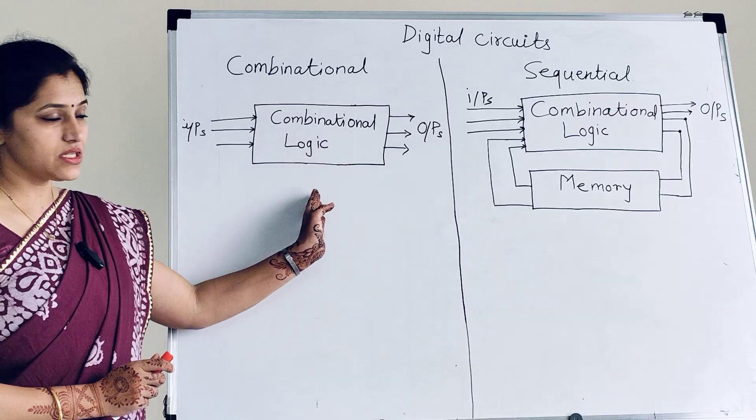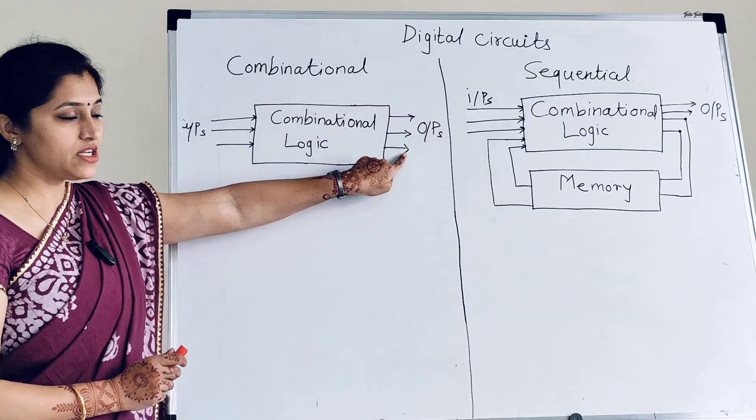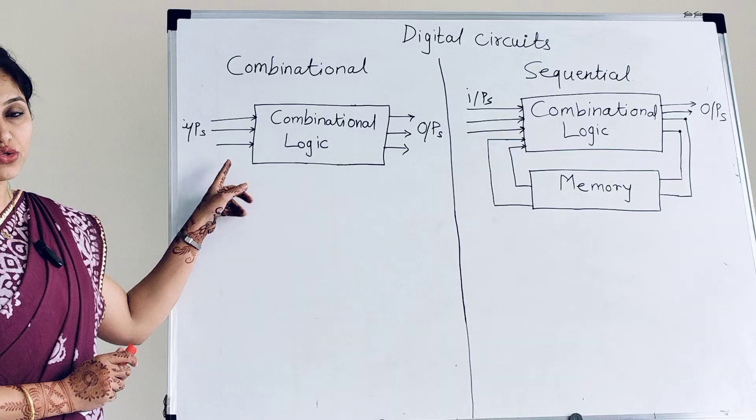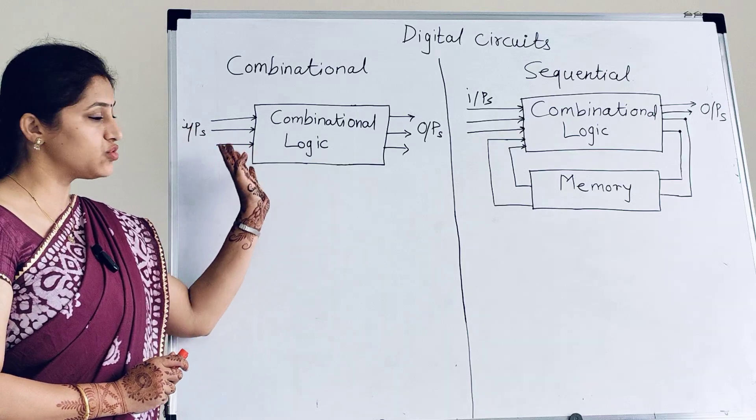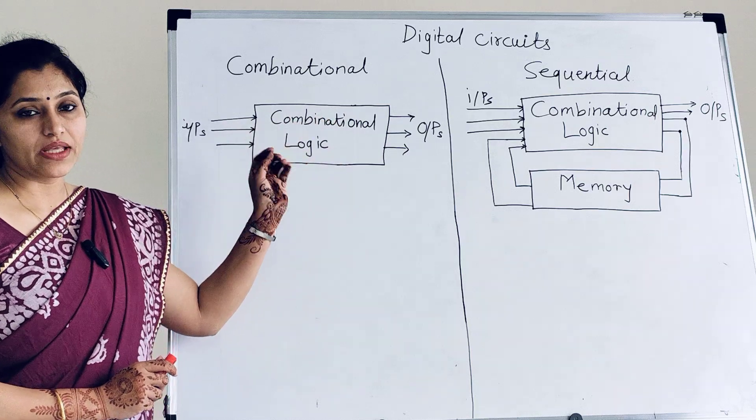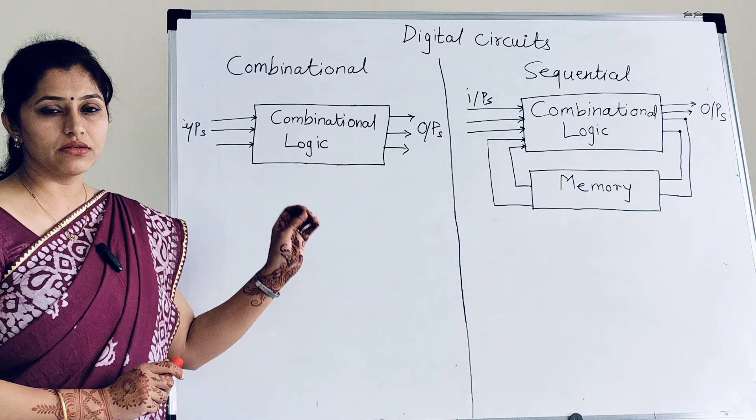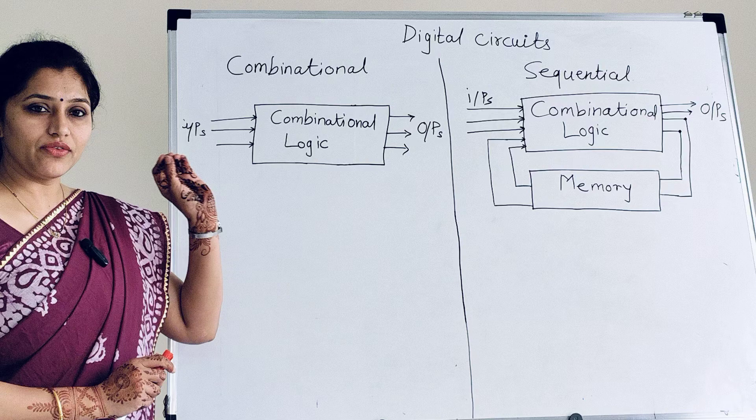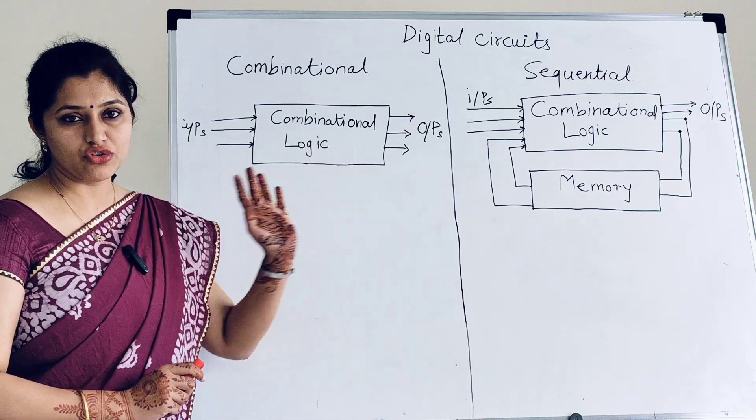Combinational circuits are where output depends on present inputs only. So whichever inputs we apply, based on those inputs, it calculates the outputs. For example, adder, subtractor, multiplexer, decoder. Whatever inputs we apply, we get output based on those inputs.